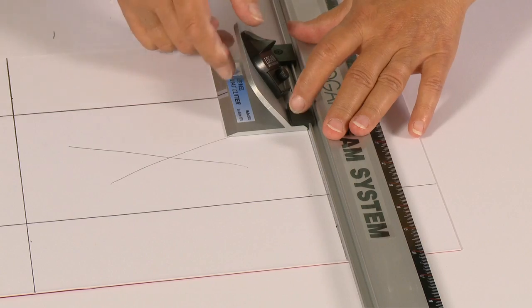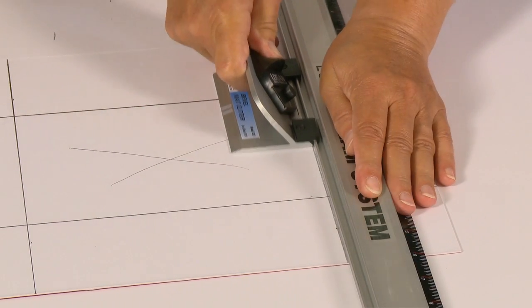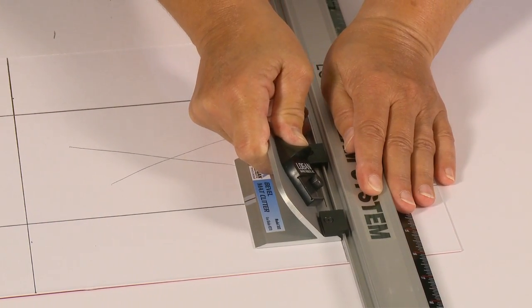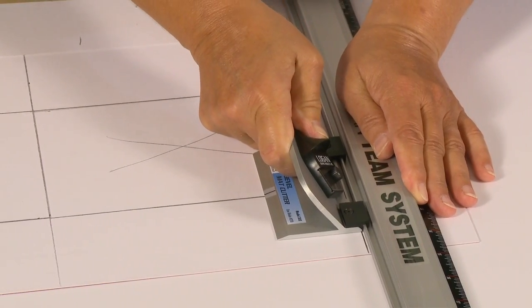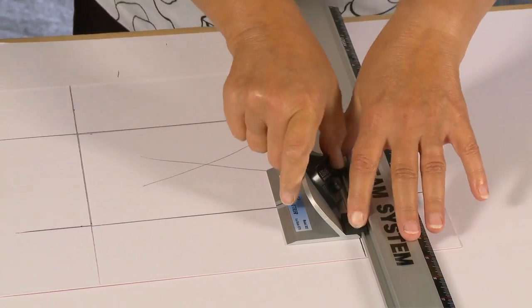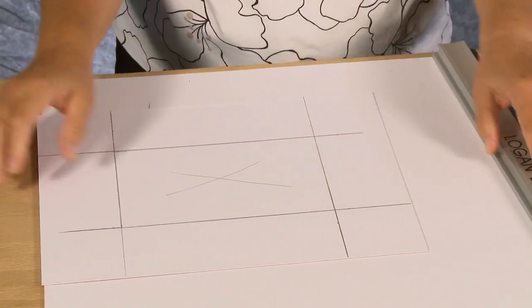Repeat this process for the remaining three sides. After the fourth cut, you will have a perfectly beveled mat cut.